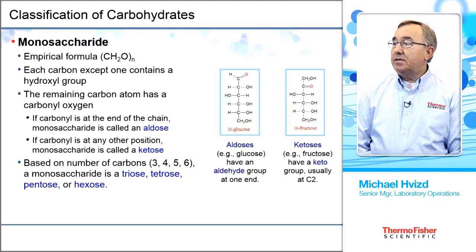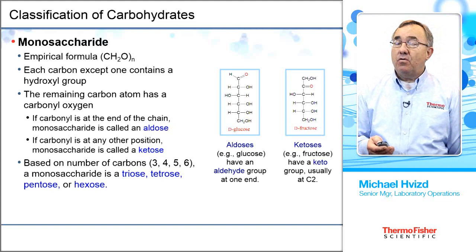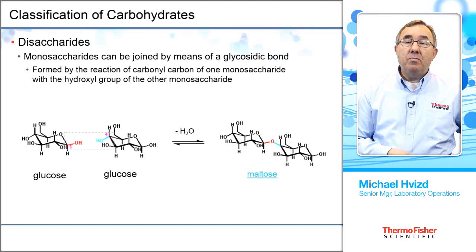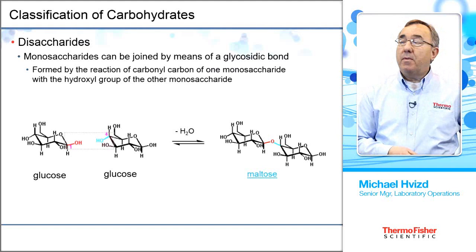Those are the monosaccharides we're able to analyze for. Next, we'll go into disaccharides. Disaccharide units are typically two monosaccharides put together with a glycosidic bond. In this demonstration, we're showing that two glucoses form maltose.